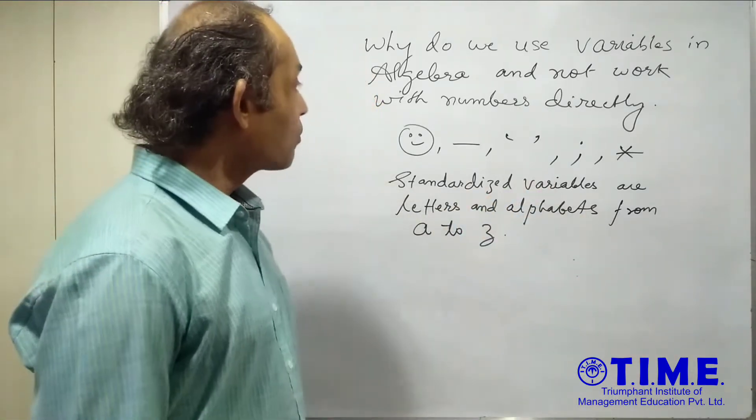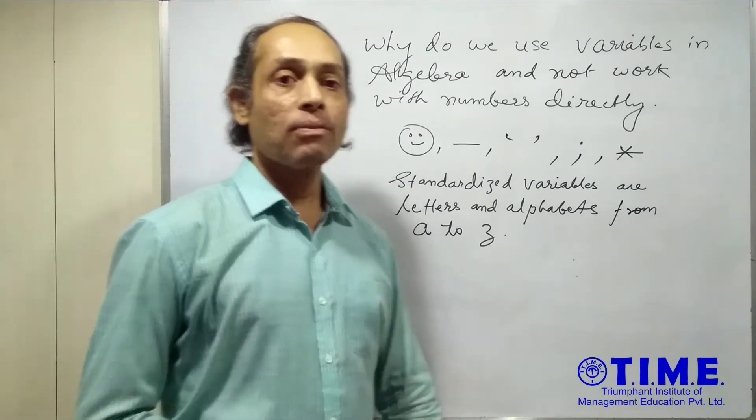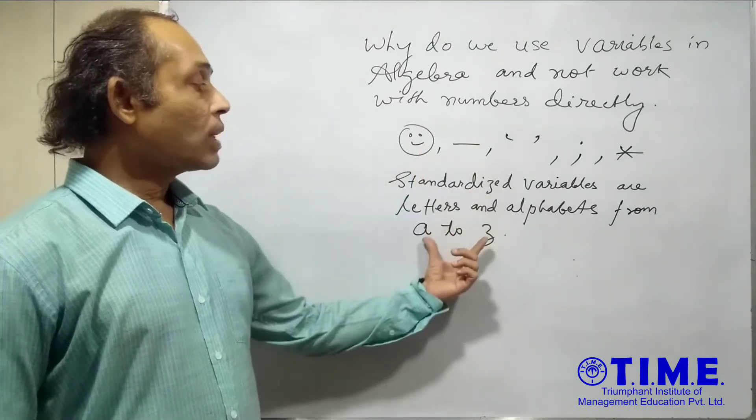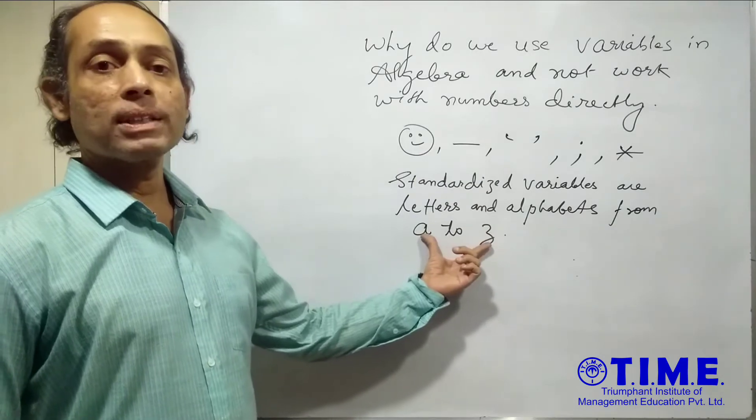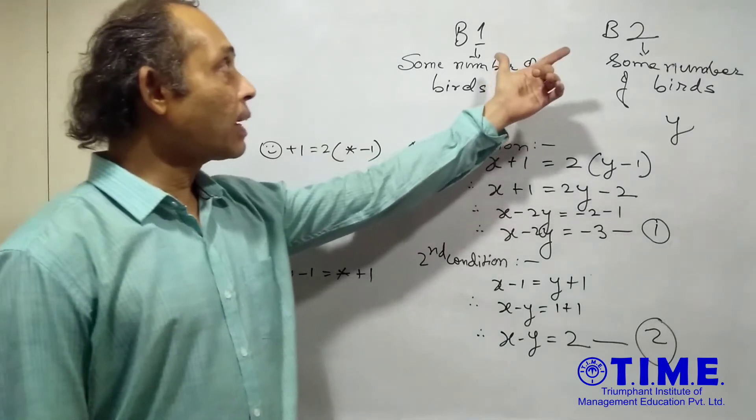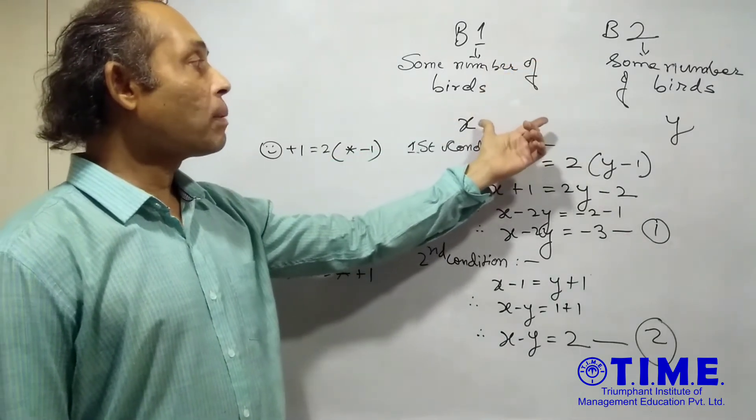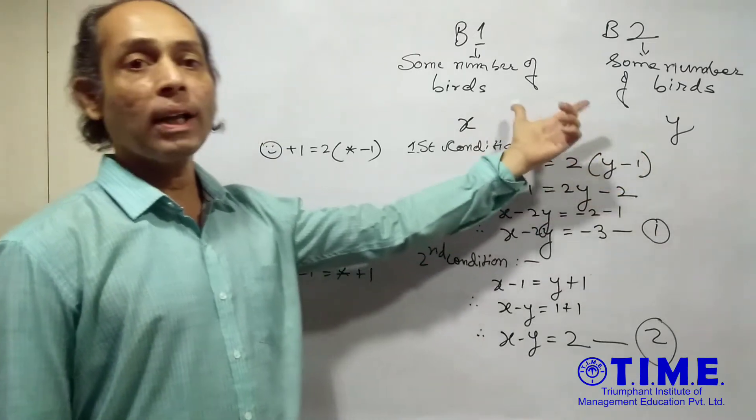Now let us see, using one of the examples, how it works for us. When we use variables such as these alphabets and letters rather than these characters. So let us now see with an example, how these particular variables such as the alphabets and letters look good in an equation.